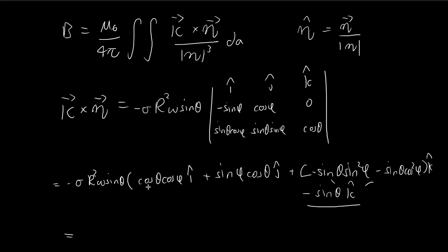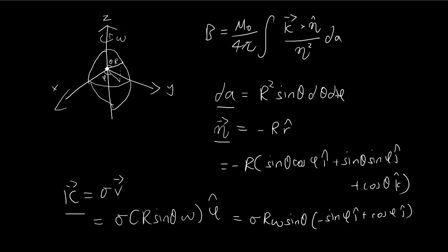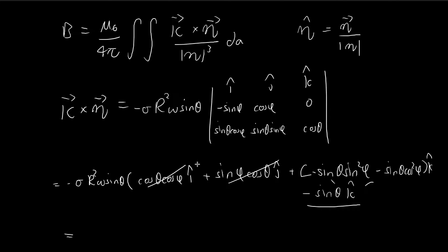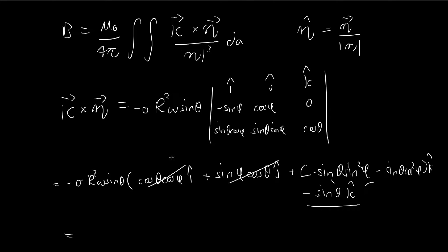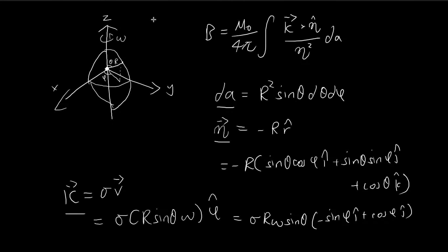When we perform the integral, the î and ĵ terms are both zero. This is because integrating cos φ or sin φ from 0 to 2π gives zero, and there are no other φ terms in those components. So only the k̂ term survives. This already tells us that the magnetic field points upward in the z-direction, which is consistent with the right-hand rule.